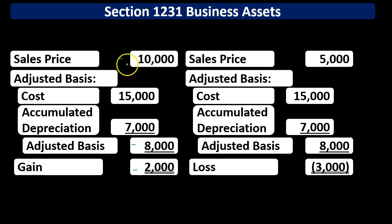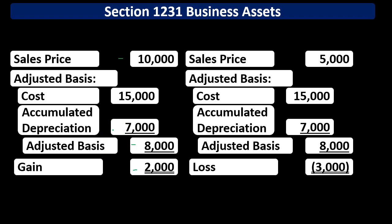Now, how did this gain happen? It's not because we received more money than the cost — it's because of the accumulated depreciation we took. That accumulated depreciation resulted in a deduction in the form of depreciation expense, and that deduction was taxed at ordinary income rates. So we received a deduction in prior years at ordinary income rates, and now the IRS questions whether it's fair for the resulting gain to be taxed at a lower rate.